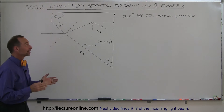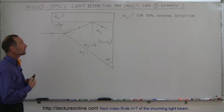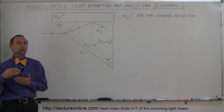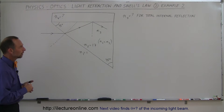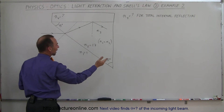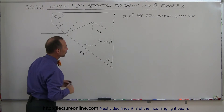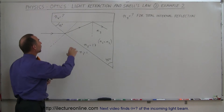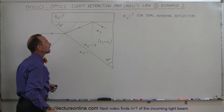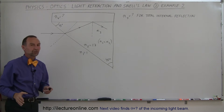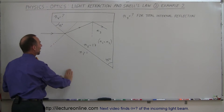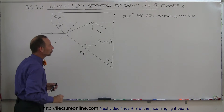Welcome to this lecture. Here's our second example of how we deal with light refraction and Snell's law, and in this case we're also going to deal with total internal reflection. We have a triangular shaped piece of glass that has an index of refraction of 1.7. Above that we have a region of another material for which we do not know the index of refraction, but we assume it's smaller than 1.7. Outside we have air with an index of refraction equal to 1.